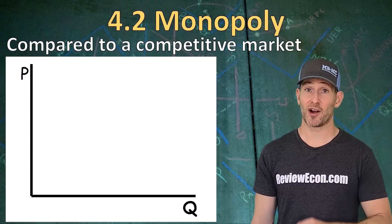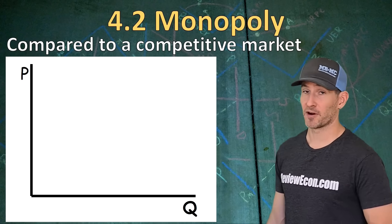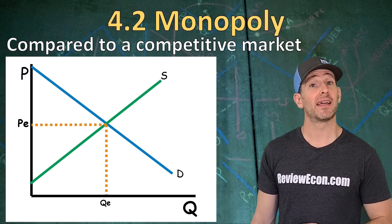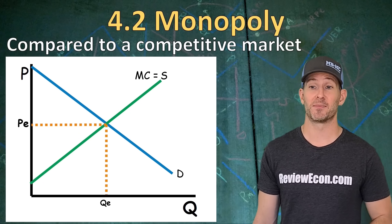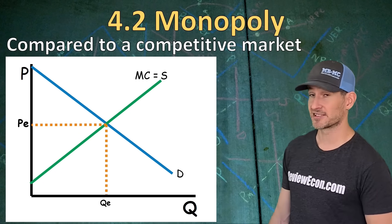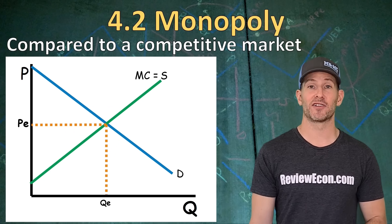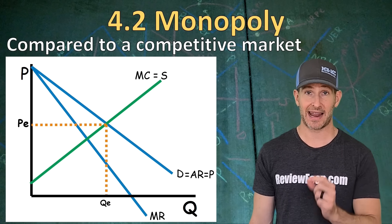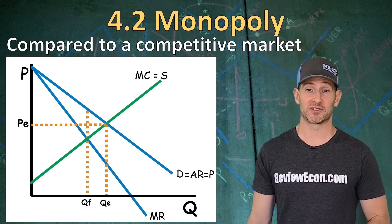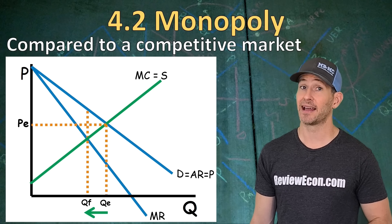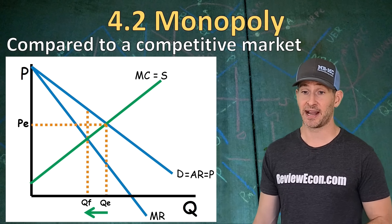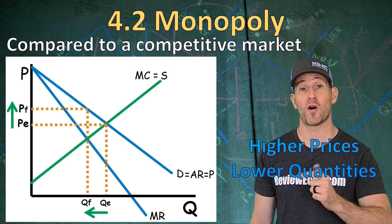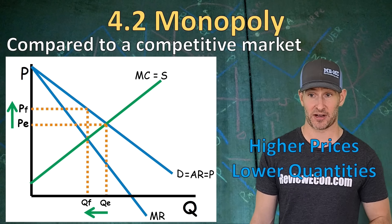Next, we're going to compare a monopoly to a perfectly competitive market. In a perfectly competitive market, we have a downward sloping demand curve and an upward sloping supply curve. Remember that the supply curve for a firm is the marginal cost curve above the minimum of the average variable cost, so supply equals marginal cost. The downward sloping demand curve is also our average revenue and price. We have a marginal revenue curve below the demand, and we can find the profit maximizing quantity where MR equals MC — that is a lower quantity than at equilibrium, and then we price all the way up to demand, giving us a higher price than at market equilibrium. So a monopoly produces higher prices and lower quantities than a perfectly competitive market.